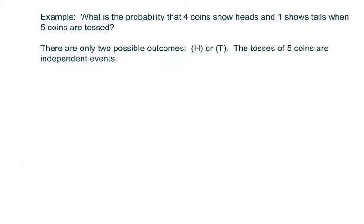So basically again, make sure you know the binomial theorem before you watch this. Okay, so here's an example: what is the probability that four coins show heads and one coin shows a tail when five coins are tossed? So there's a fixed number of trials, five coins, and the possibility is either heads or tails. And the probability of getting a heads is one half and the probability of getting a tail is one half.